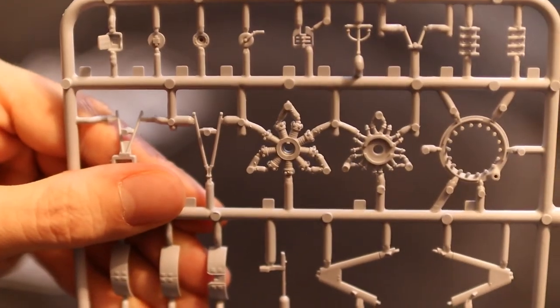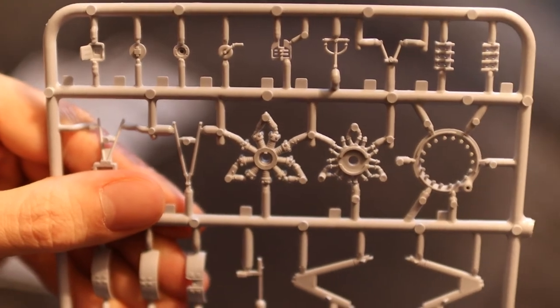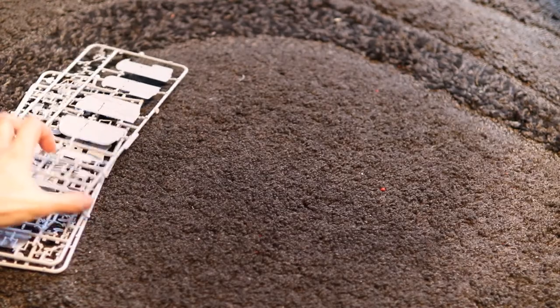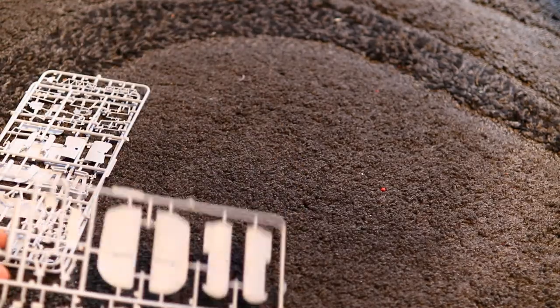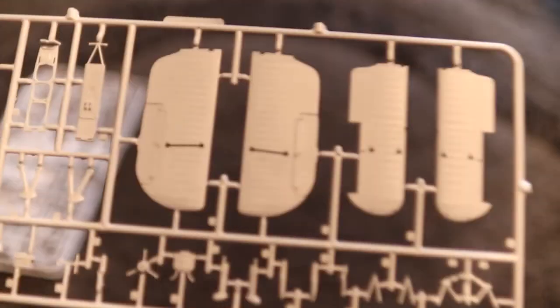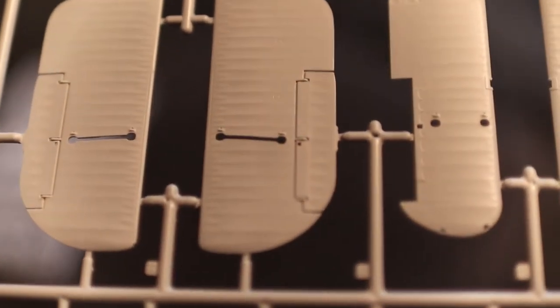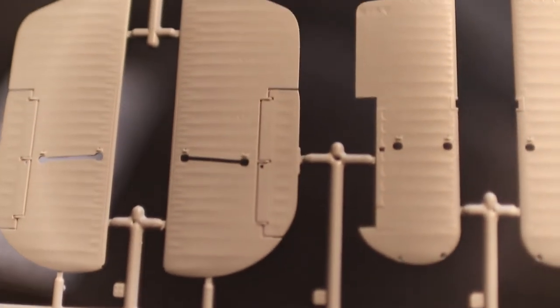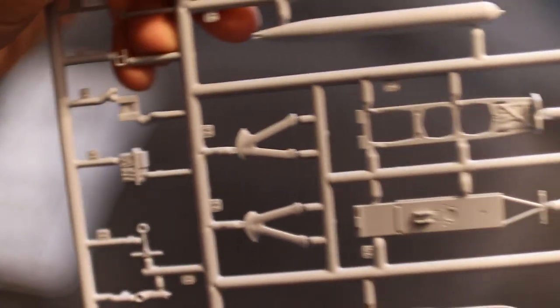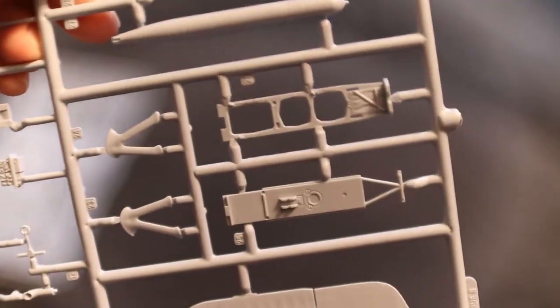Now what I don't know is how this comes together fit-wise because obviously I've not built this one yet. But let's take one of the wing sprues. You've got your ribbing there, all very nice again. And then we start the crew compartment area and there's your torpedo, very nice again, looking good.